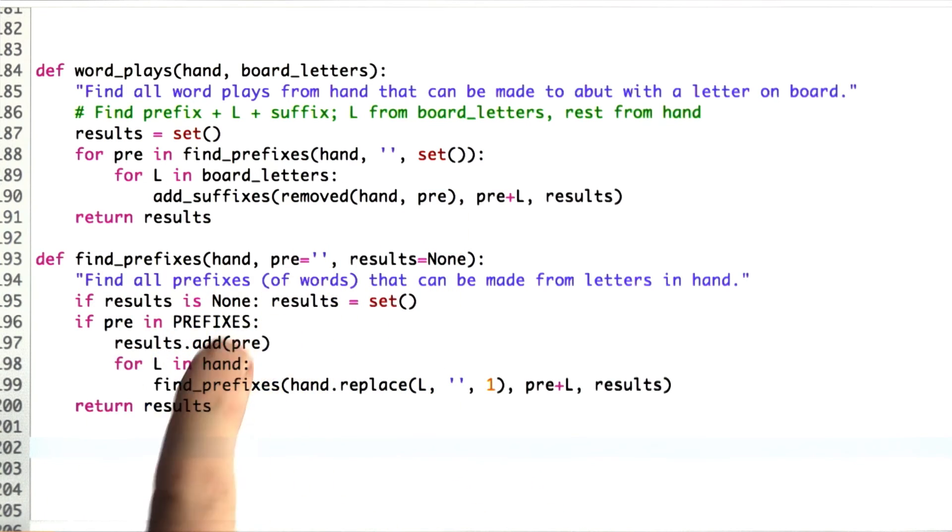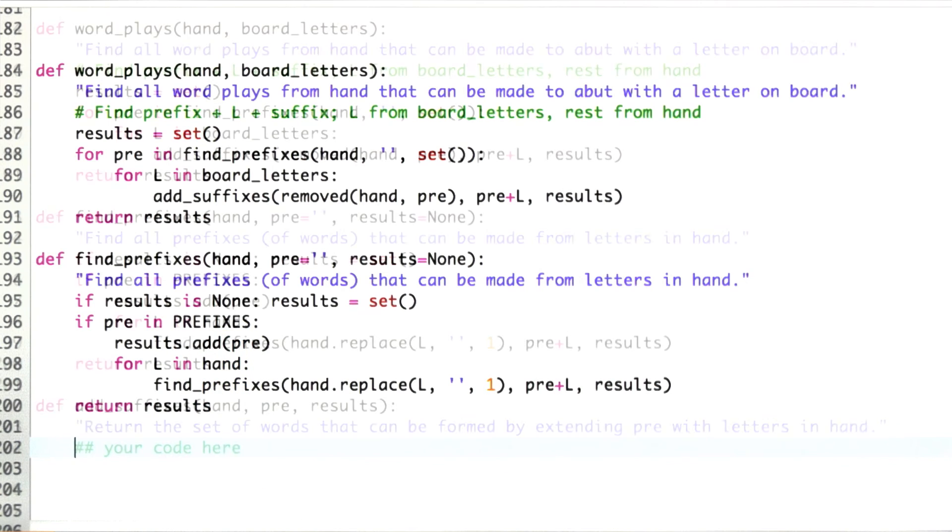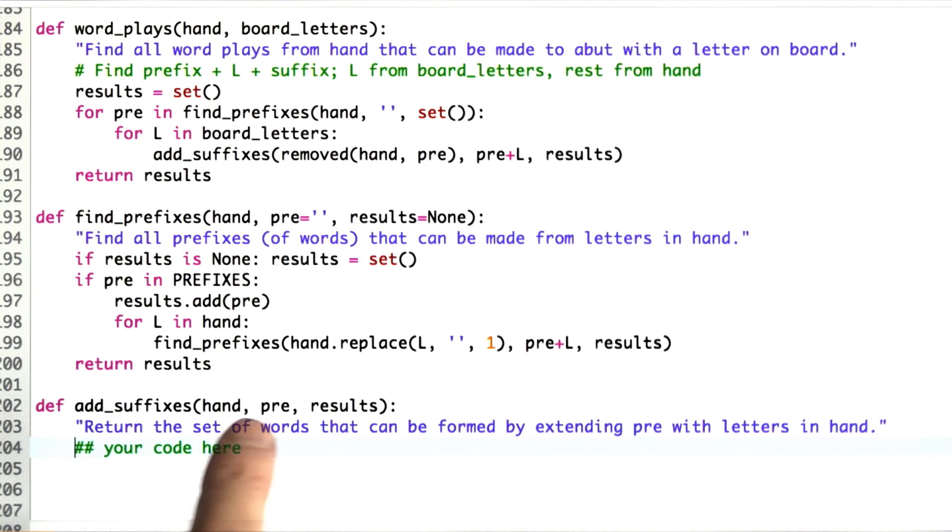Find prefixes is just like find words, except we're collecting things that are in the prefixes rather than things that are in the list of words. Now, I want you to write add_suffixes. Given a hand, a prefix that we found before, a result set that you want to put things into, find me all the words that can be made by adding on letters from that hand into the prefix to create words.